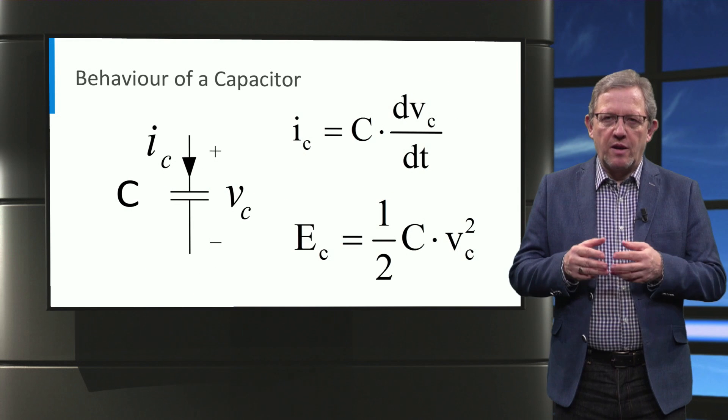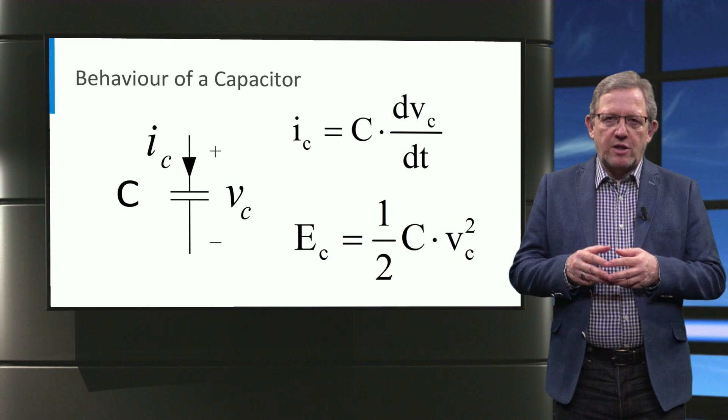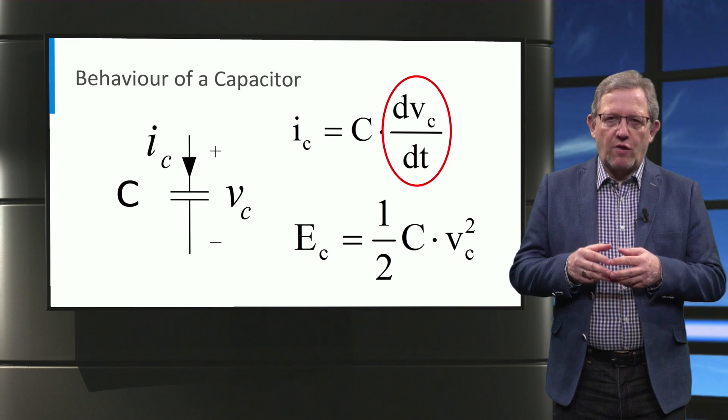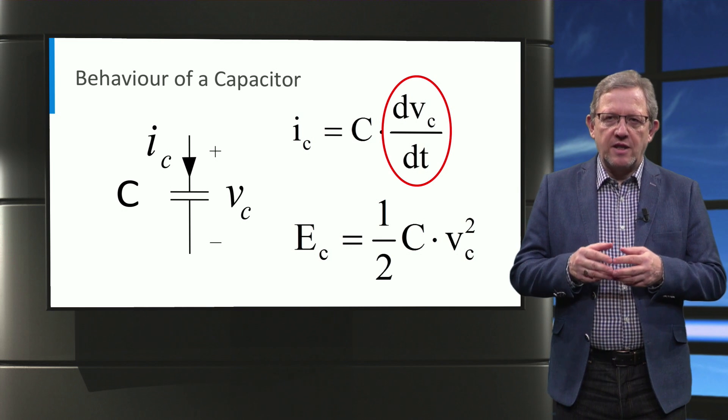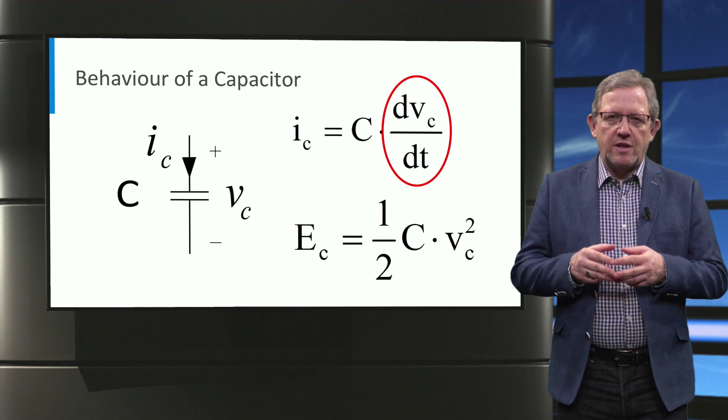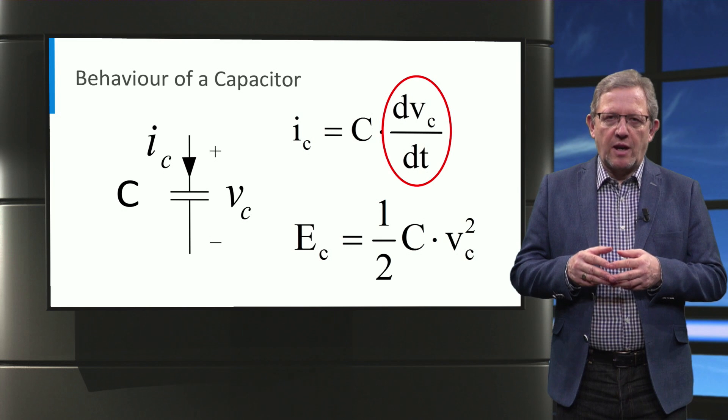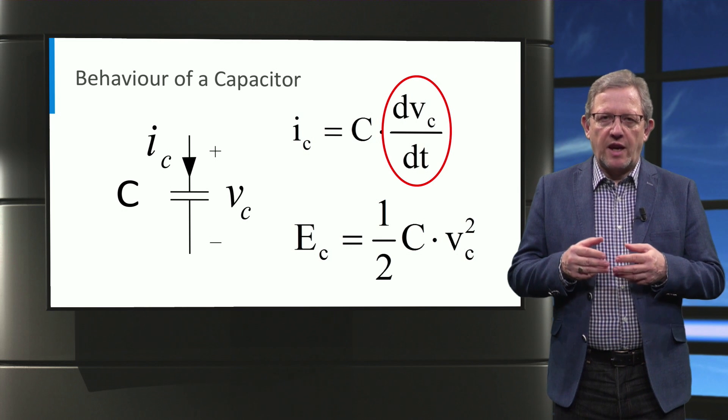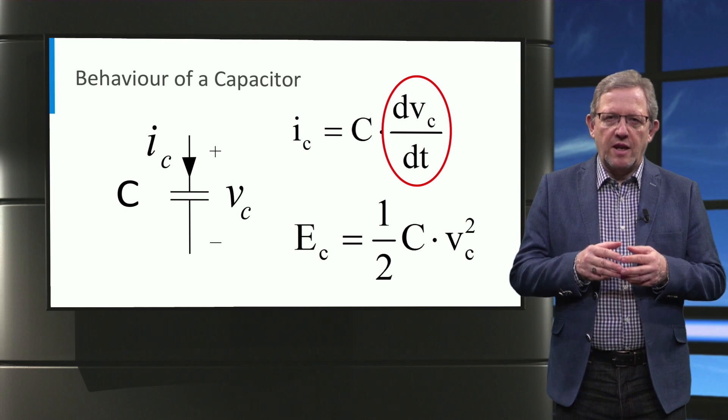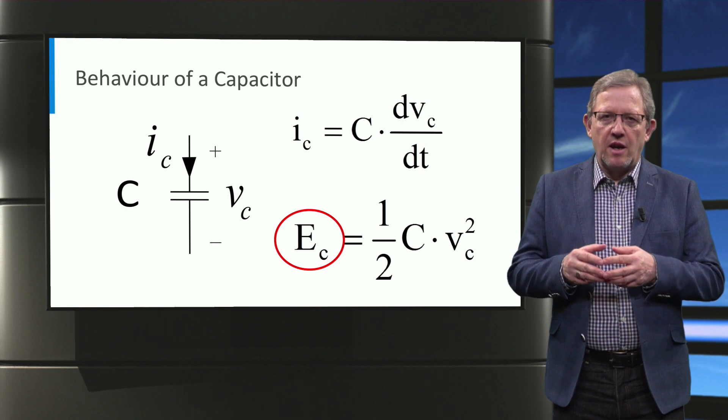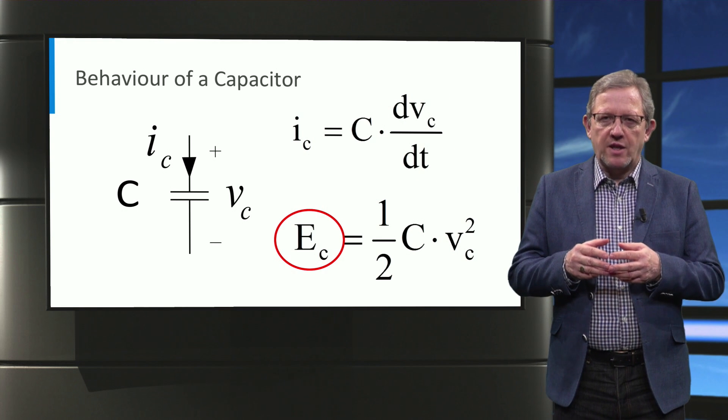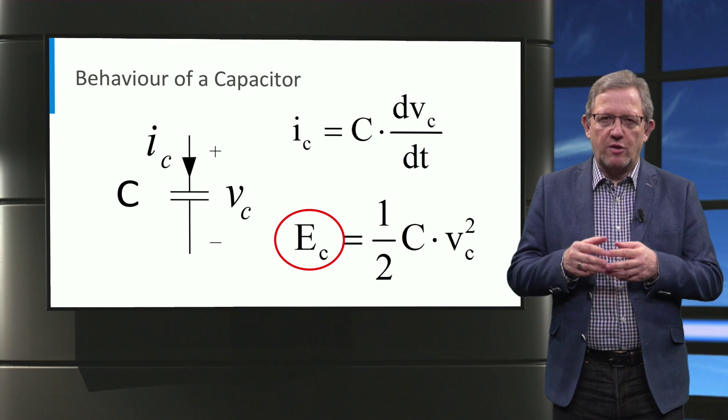In the previous slides we mentioned that the capacitor helps reduce the output voltage ripple, and indeed the capacitor suppresses the rate of change of the output voltage, which is reflected as the current of the capacitor. This is mainly because the capacitor can maintain the voltage to some extent by absorbing or releasing its stored energy E_C, which depends on the capacitance and the square of the DC voltage across the capacitor.